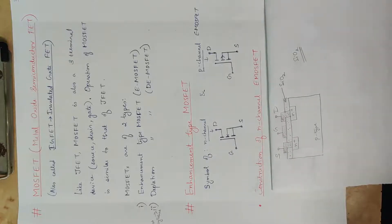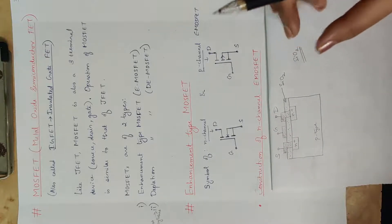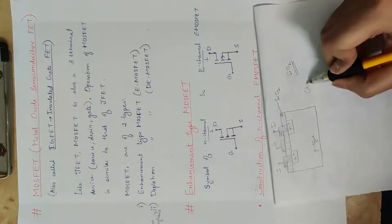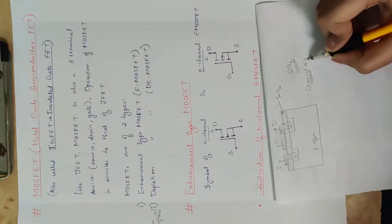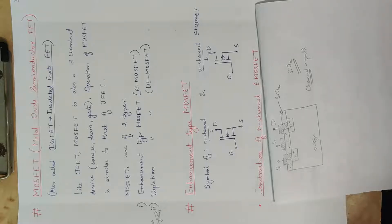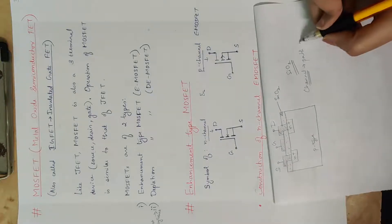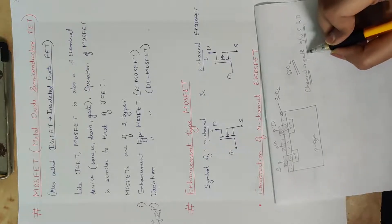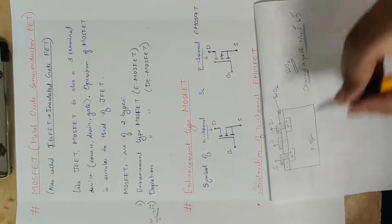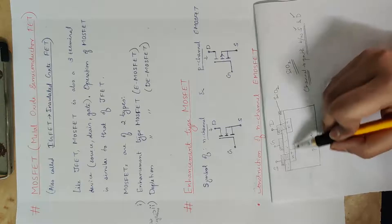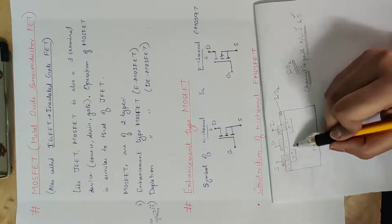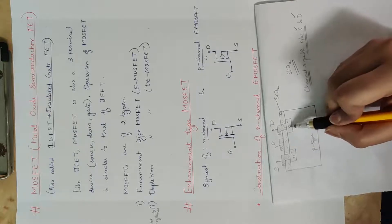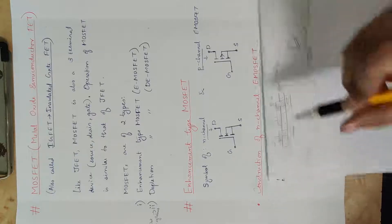This is the N-Channel E-MOSFET. What is the reason for calling it N-Channel? The channel is the path between source and drain, and the majority carriers flow through this path. Since the source and drain are N-type, it is called an N-Channel.